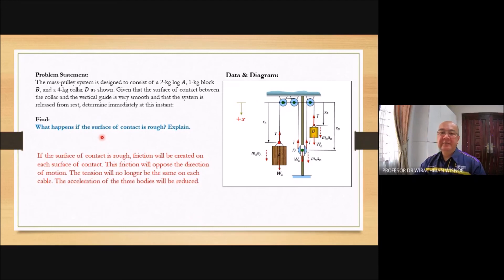What happens if the surface of contact is rough? Explain. If the surface of contact is rough, just check which one. For example here and then there. Friction will be created on each surface of contact. This friction will oppose the direction of motion. So what happen is that the tension will no longer be the same on each cable. Acceleration of the three bodies will be reduced.